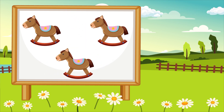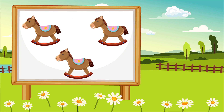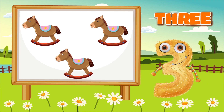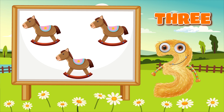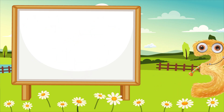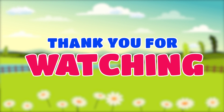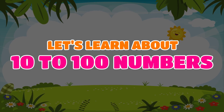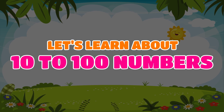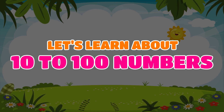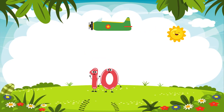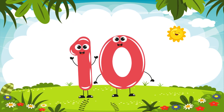How many objects are here? Three. Three objects. Five. Five. Five.